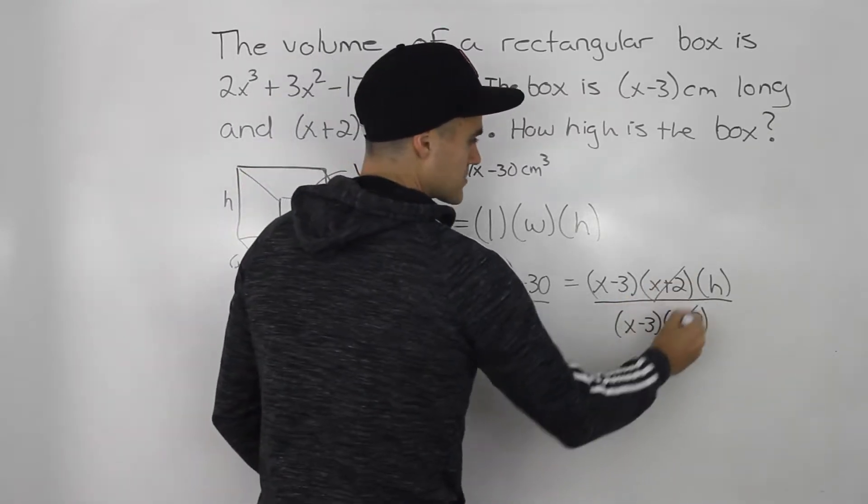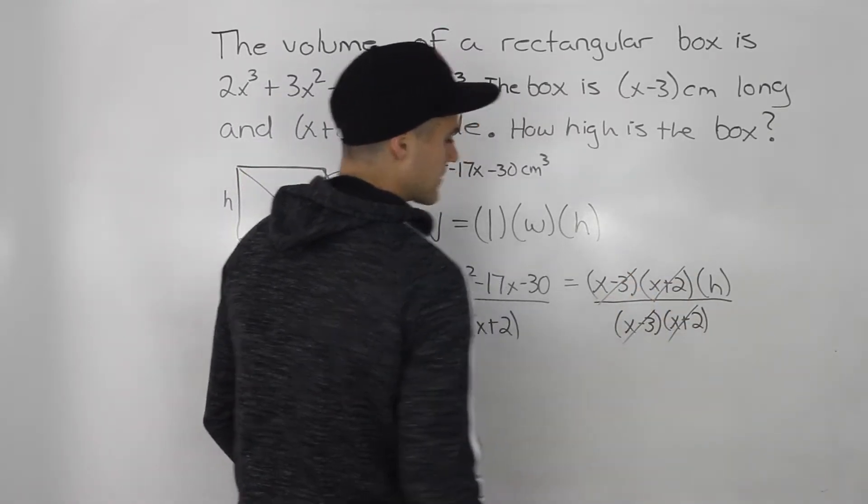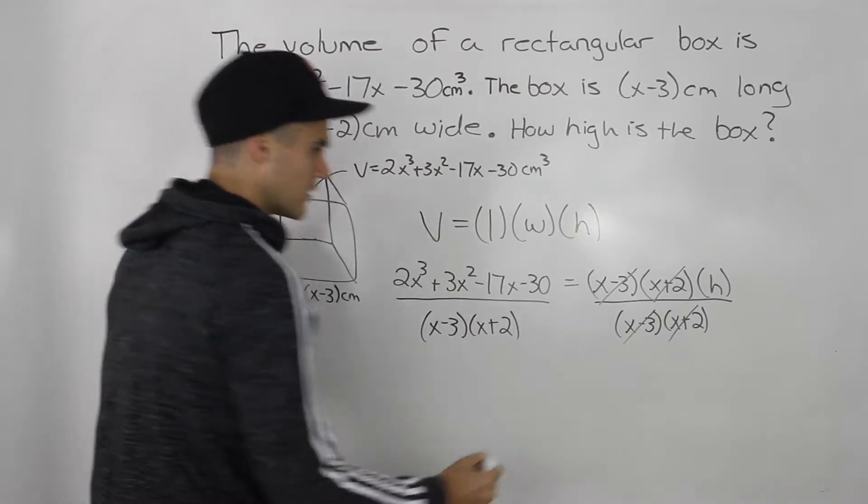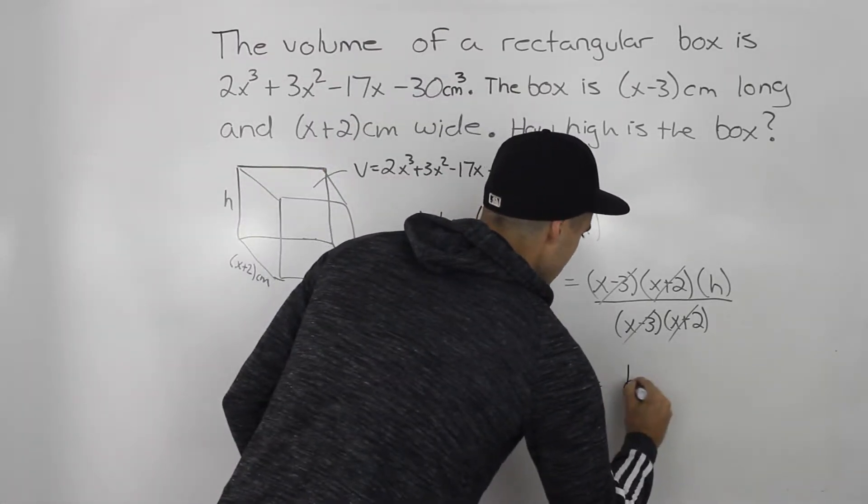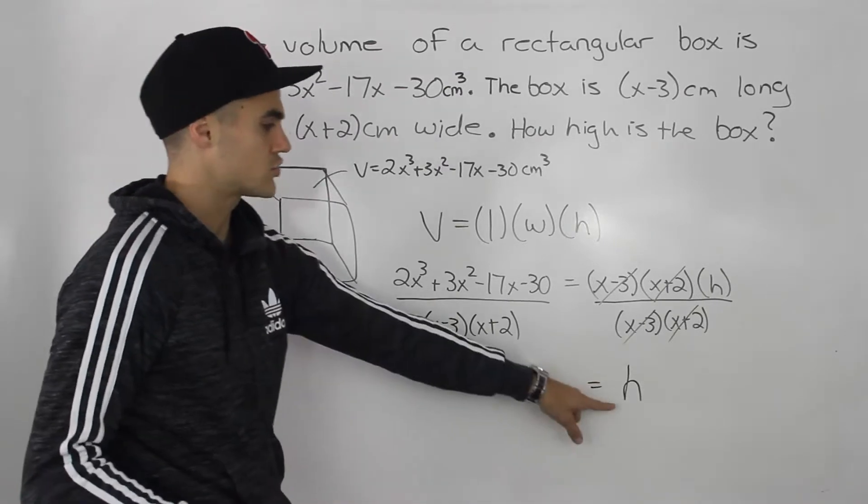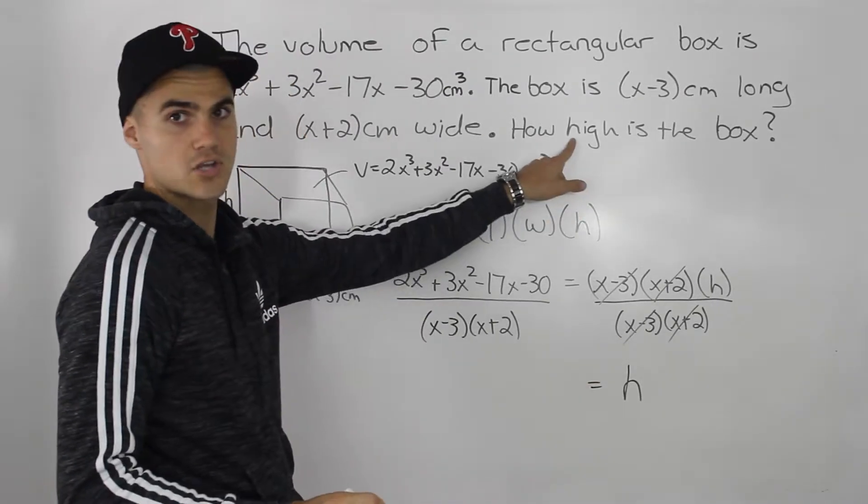And now notice how the (x+2)'s here cancel out and the (x-3)'s cancel out. So you are just left with an h on the right side, which is good. We're trying to isolate for h. That's what we're trying to solve for.